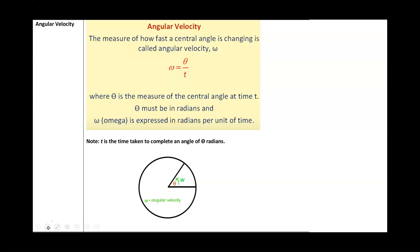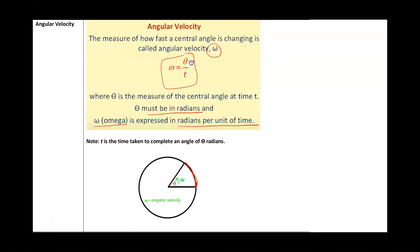Now let's talk about angular and linear velocity. Angular velocity is the measure of how fast a central angle is changing, represented by the symbol omega. Theta is the measure of the central angle at time t, and theta must be in radians. Omega is expressed in radians per unit of time. Think of a particle moving around a circle — angular velocity describes how fast angle theta is changing.